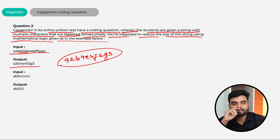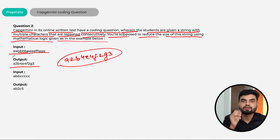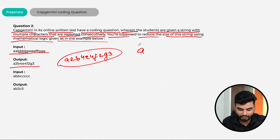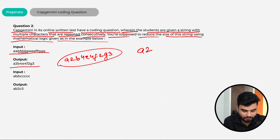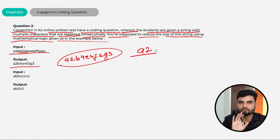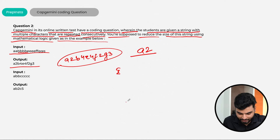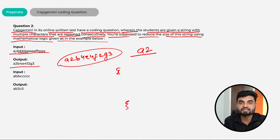To solve this, you need to count the frequency of each character. One approach: take the first character and keep checking until you reach a different character, count occurrences, then move on to the next. Another approach is to use a HashMap — use the characters as keys and count their frequencies as values. Check if the character exists in the map; if not, put it with value 1. If it does exist, increment by 1.